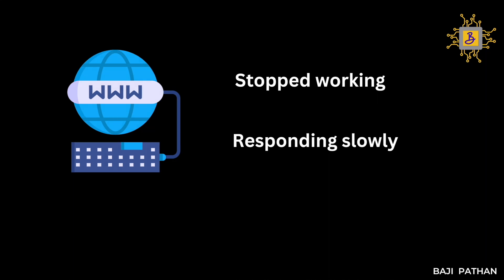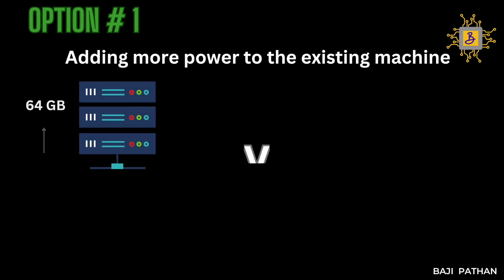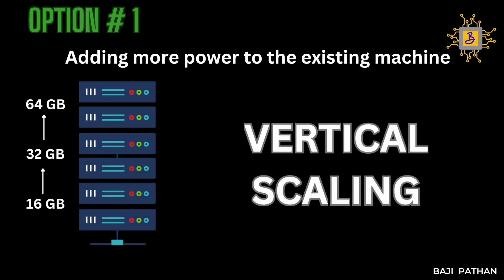The first option is adding more power to the existing machine — that means adding better processors or increasing RAM, in other words, increasing the hardware capacity. By adding additional CPU, memory, and disk space, this will definitely boost the application performance without modifying the code. This is also called vertical scaling.